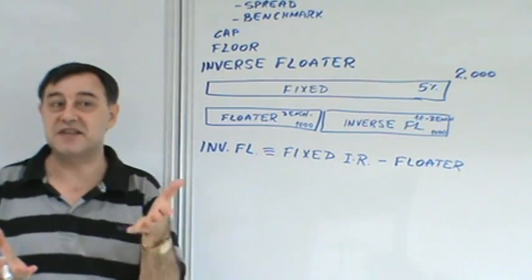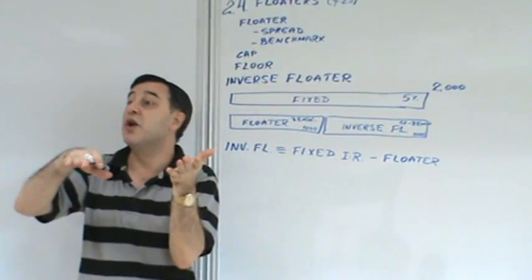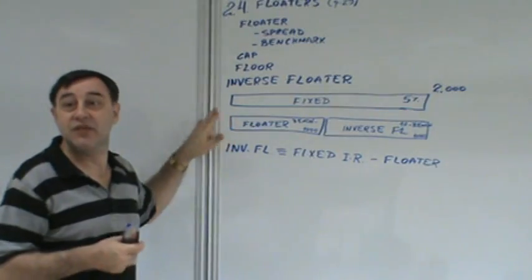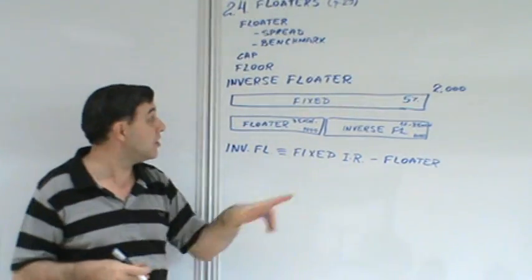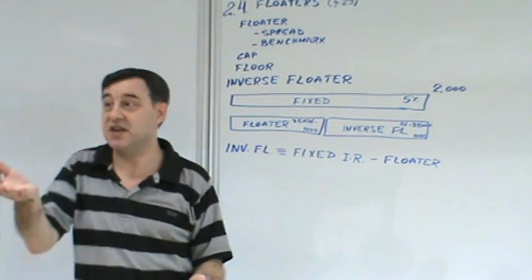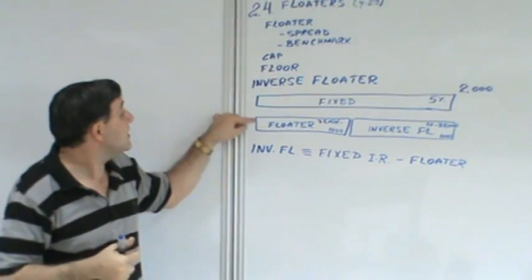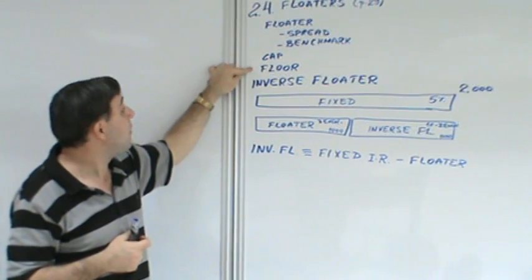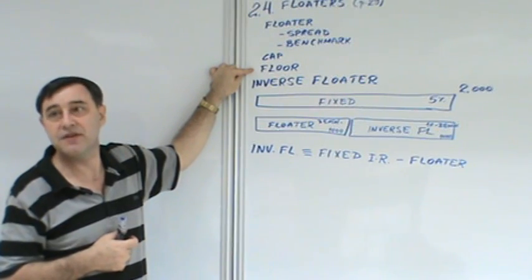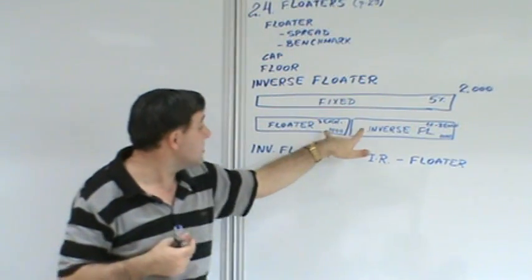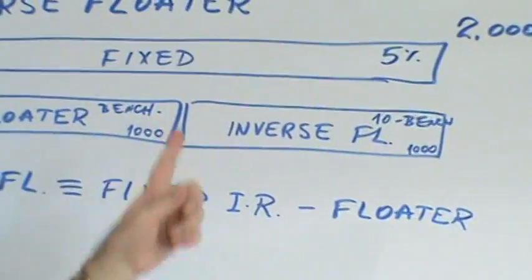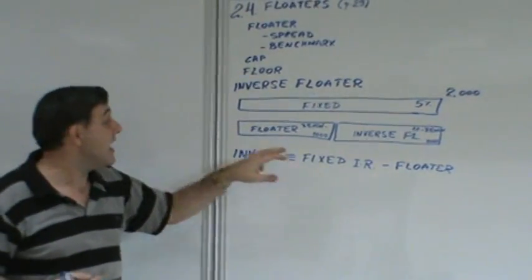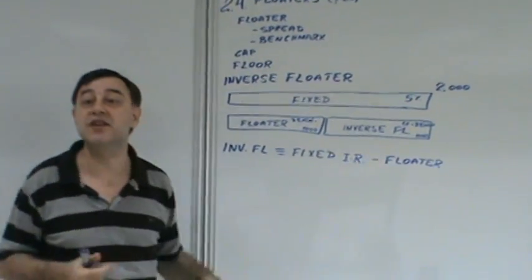As the floater goes up from 5, 6, 7, 8, 9 to 10, the inverse floater goes down 5, 4, 3, 2, 1, 0. And in the opposite direction: if the floater falls to 4, 3, 2, 1, 0 the inverse floater rises to 6, 7, 8, 9, 10. Both have a cap of ten and a floor of zero. When you add them up they always equal ten — that is how the inverse floater is constructed.